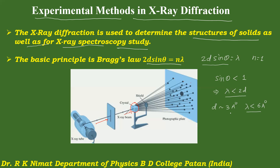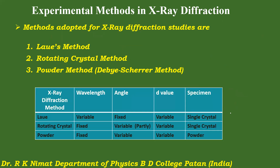Depending on which parameter is varied — whether θ or λ — and what kind of crystal is used, there are different X-ray diffraction methods. These methods are: first, the Laue method; second, the rotating crystal method; and third, the powder method, also called the Debye–Scherrer method, devised by the scientists Debye and Scherrer.